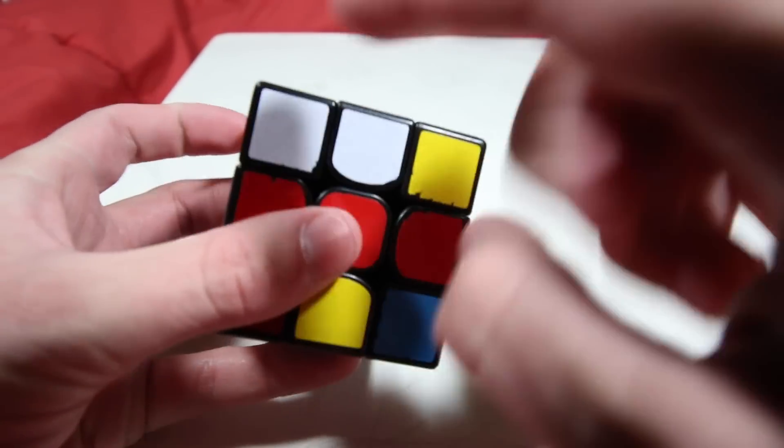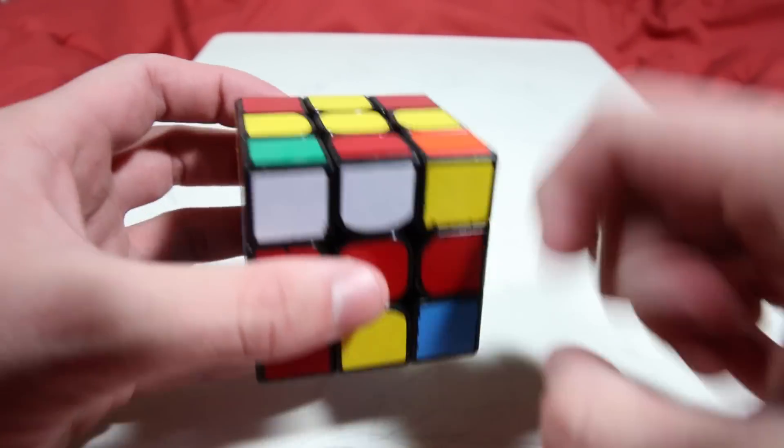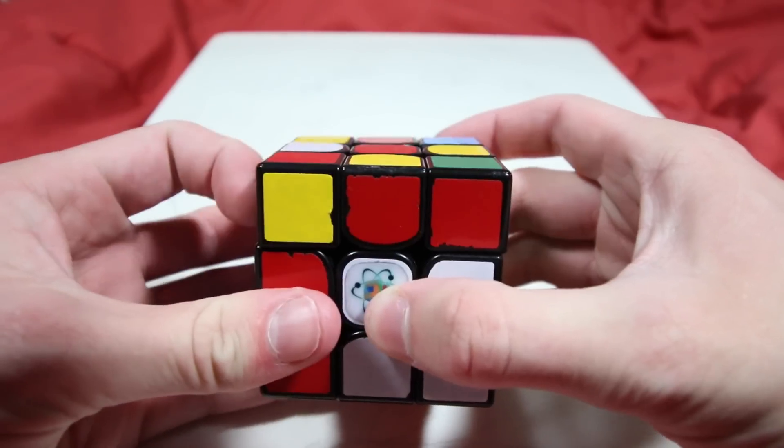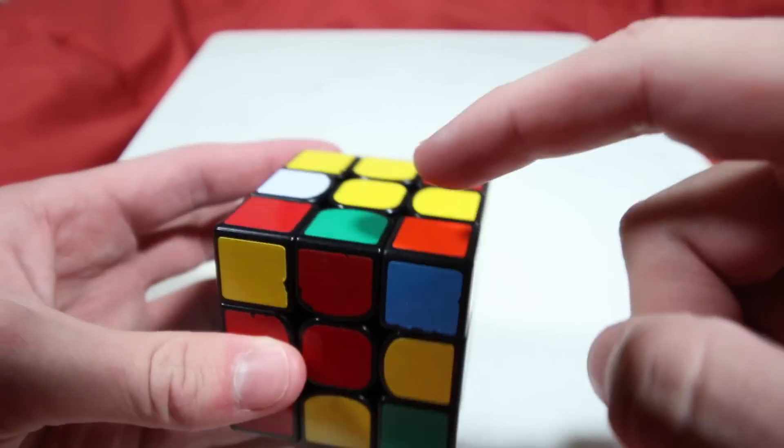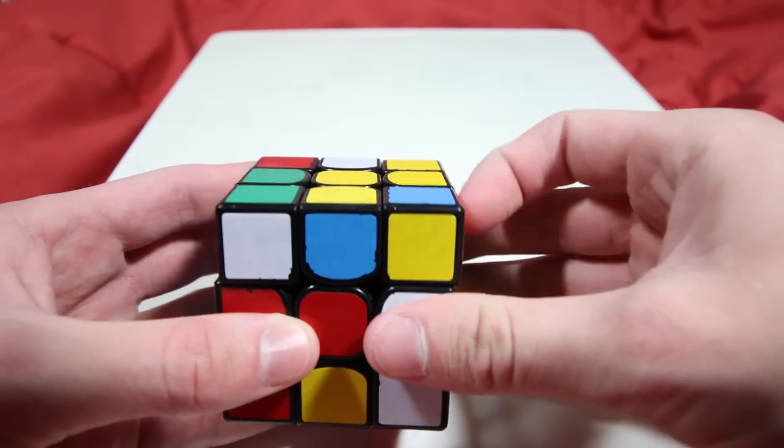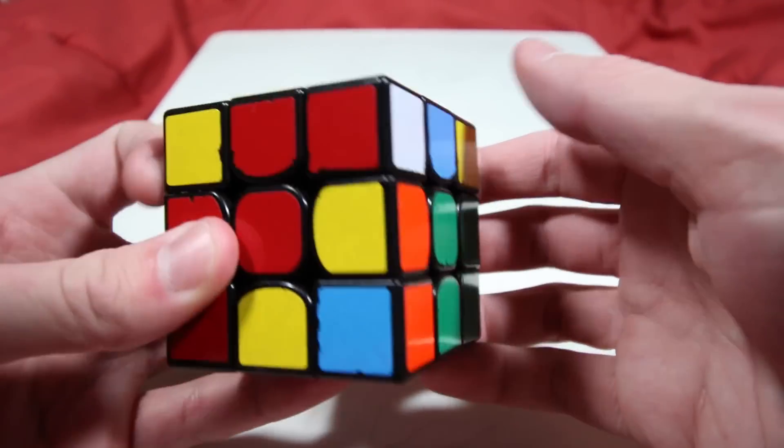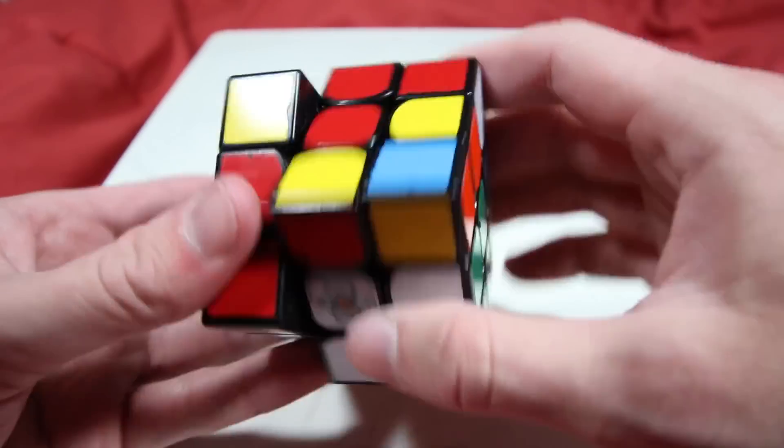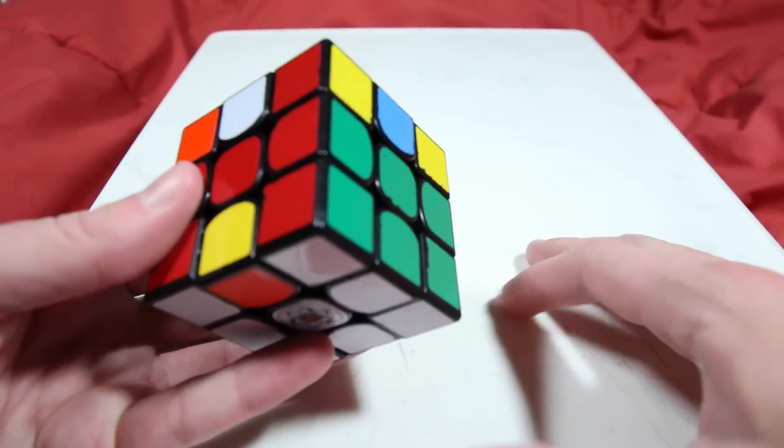The next step is to add the final corner to the first two layers. So you just position it in the FLU spot and use wide turns to move it to the D layer. This does take the edge out of the E layer, but you can just pair it back up with the corner, kick it out of the way, restore your hexagon, and then insert the edge corner pair as if you're just inserting the edge back into the E layer.